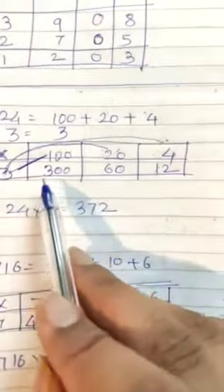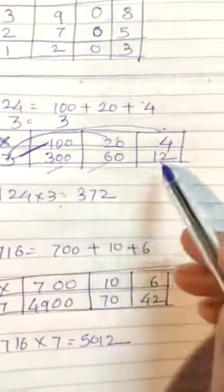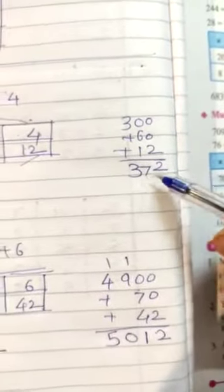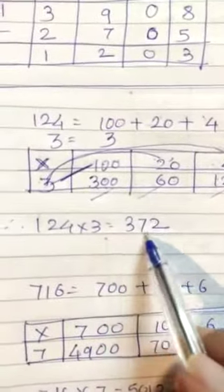Therefore answer is, now add all these answers. The answers you have to add. Not this and this. This. 360 and 12. Add it. 360 and 12. That is 372. So 124 into 3 equals to 372.